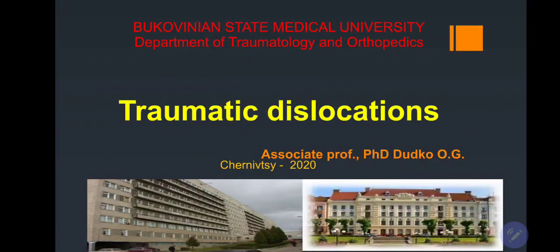Hello. Today we are going to discuss traumatic dislocations. A dislocation is a condition when there is a loss of contact between two articular surfaces. It is considered to be a severe injury of a joint. Subluxation is a partial loss of contact between articular surfaces.